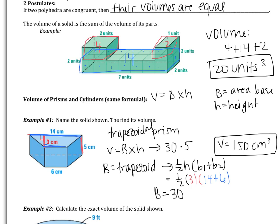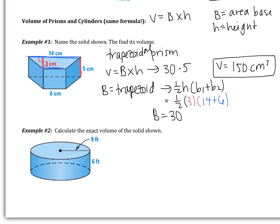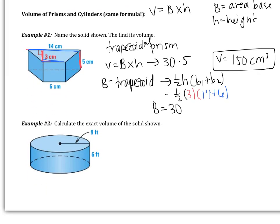Prisms tend to be a lot easier than surface area, which is nice — you just find the area of the base and multiply by the height. The next example says calculate the exact volume of the solid shown. This is a cylinder, so volume equals area of the base times height. The base is a circle, so the area of the base is pi r squared. Pause the video and try this one on your own. Come back only after you have finished the problem.